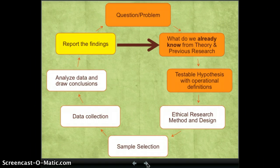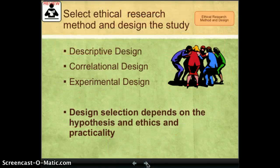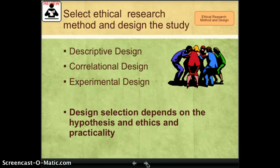This is the scientific research process. We're working on this step called Ethical Research Method and Design. There are three different types of designs: descriptive, correlational, and experimental.